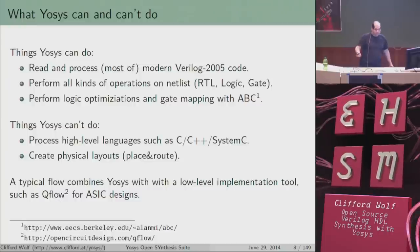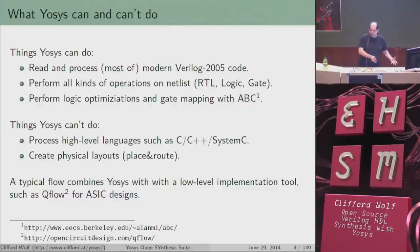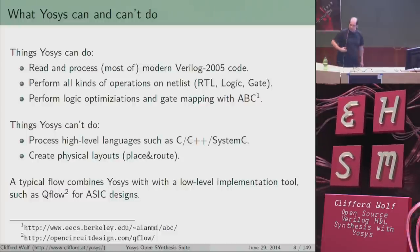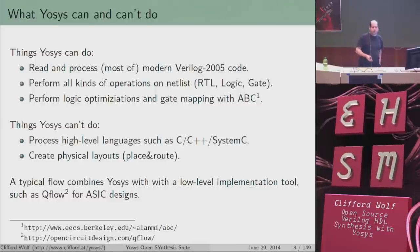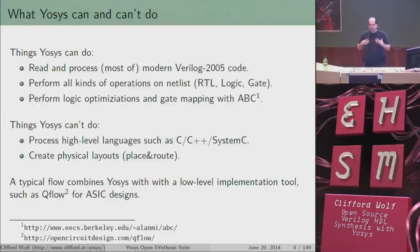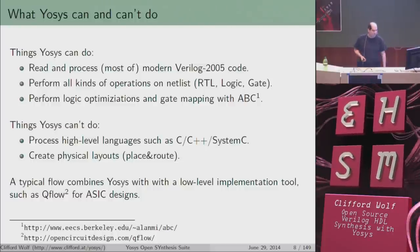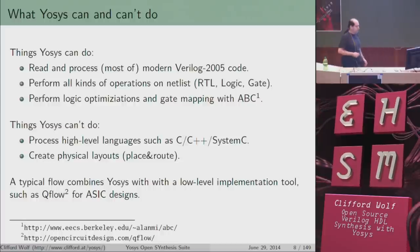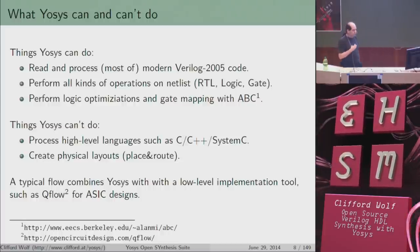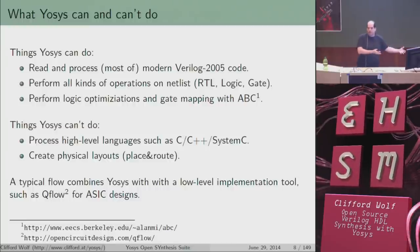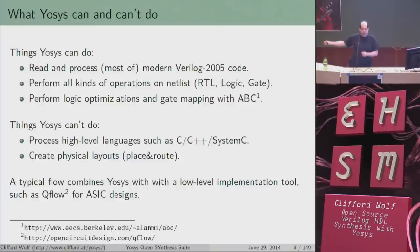Things Yosys can't do: we can't do high-level synthesis — we can't take C, C++, or SystemC and transform that into a circuit. Yosys also can't create physical layouts; if you're creating a chip, you need geometry information about where to put each gate on the silicon wafer, and you need a different tool for that. A typical flow would combine Yosys as an HDL frontend with another tool for place and route — one open-source possibility is Qflow.